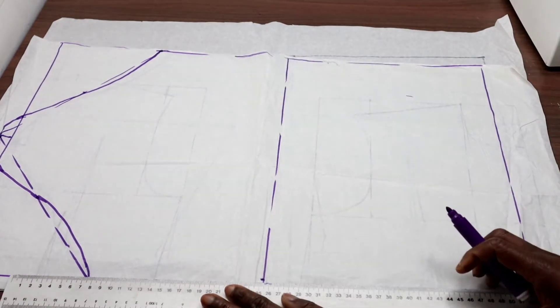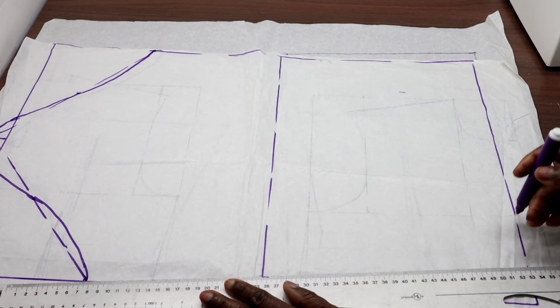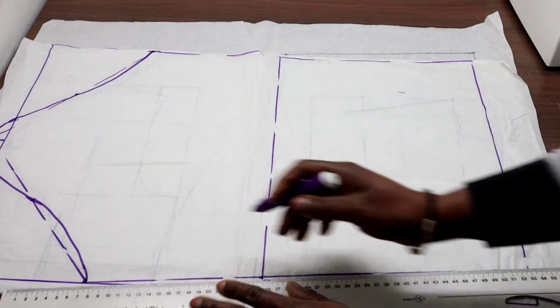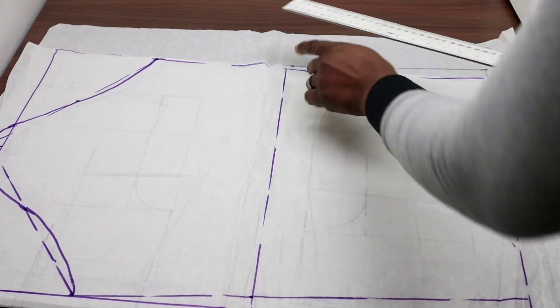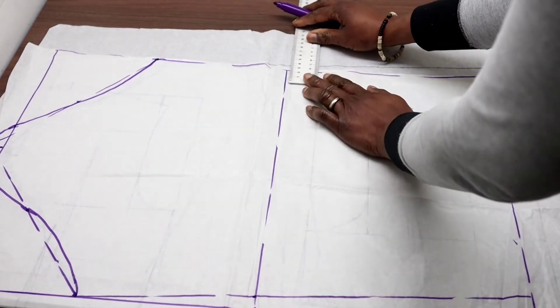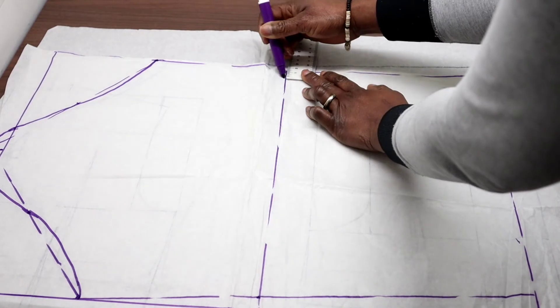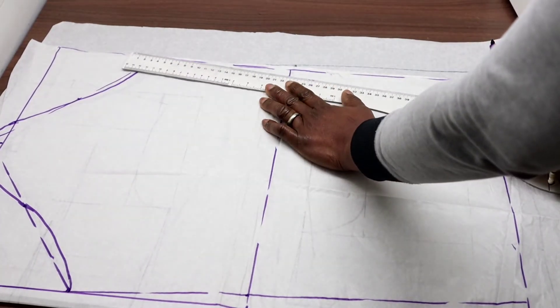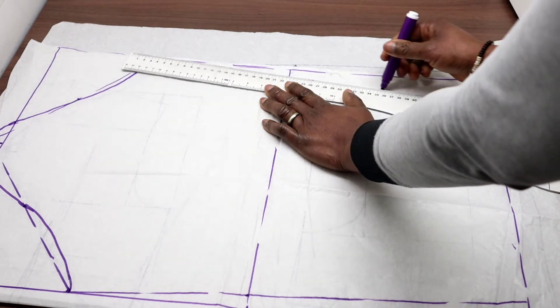We draw an invisible line. Then we do the same here. We go in with 1.5 centimeters. We draw an invisible line. Because this is not the correct lines of our sleeve.